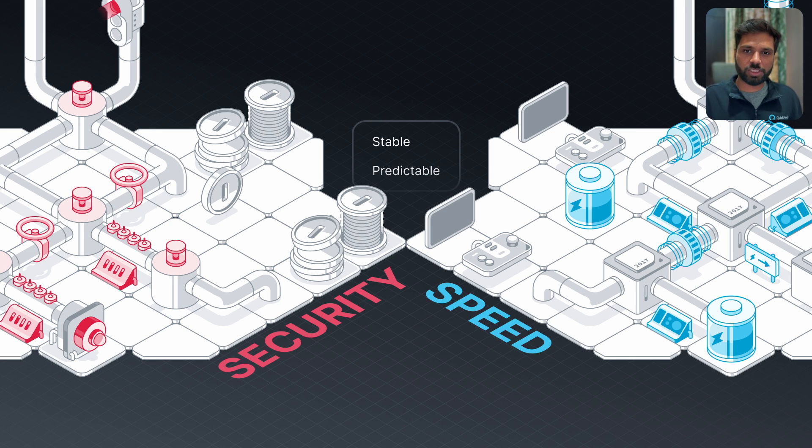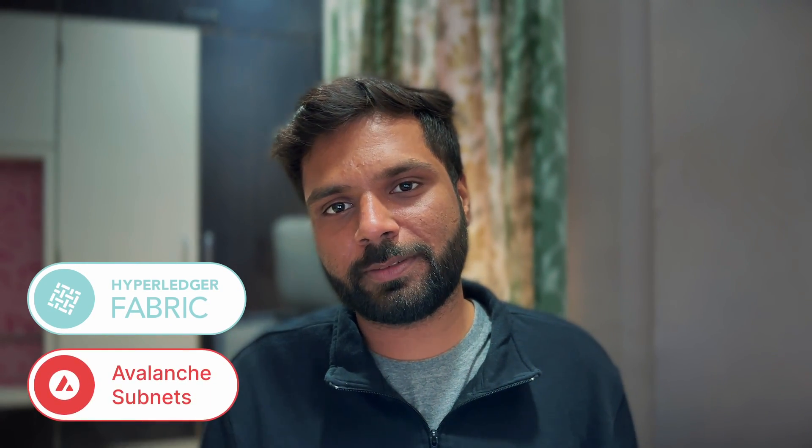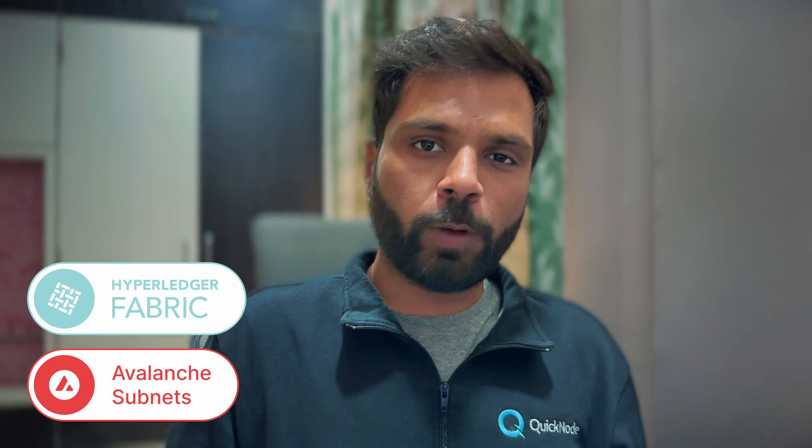There are multiple solutions out there which help you create your own app chain fast and efficiently. Some of them are Hyperledger Fabric and Avalanche Subnets. Though you can create your own app chains using these SDKs or frameworks, you still need some secondary applications like a faucet, blockchain explorers, and infrastructure like nodes and indexers.